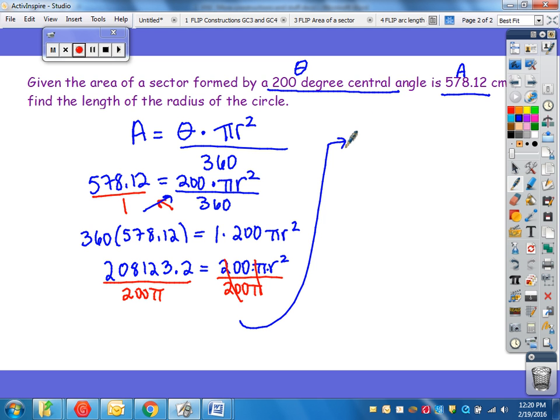and I'm going to start writing up here. So r squared equals, I'm going to use the calculator to divide that out. So 208,123.2 divided by 200 pi, leaves me with 331.238, so I'm going to round that to about 331.24.